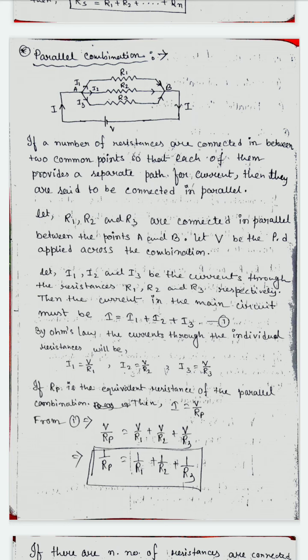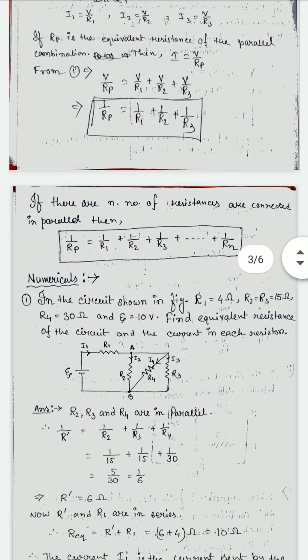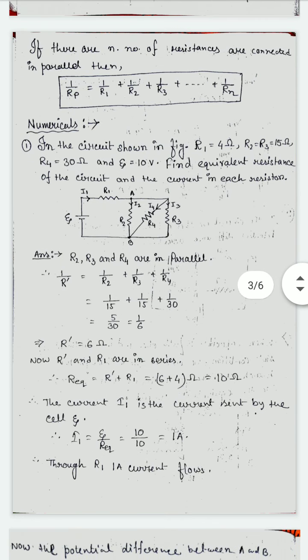So in parallel combination, the equivalent resistance is minimum, but in series combination the equivalent resistance is maximum. If resistance is maximum, the current flowing through the circuit will be minimum. If resistance is minimum, the current is maximum. That is why in a household circuit we use the parallel combination — this is one main reason. If there are N resistances, then 1/Rp = 1/R1 + 1/R2 + 1/R3 + ... + 1/Rn.